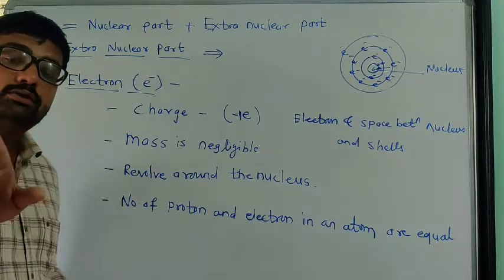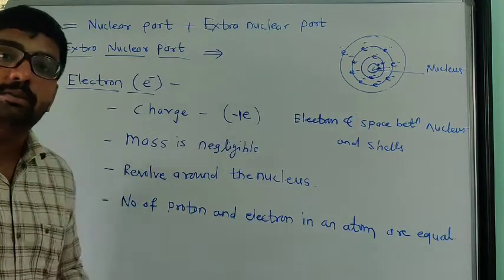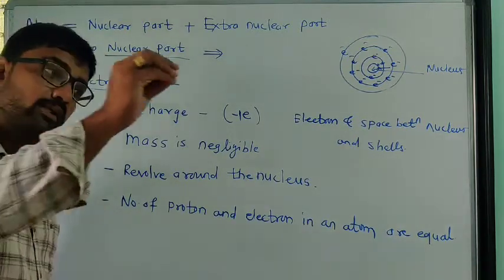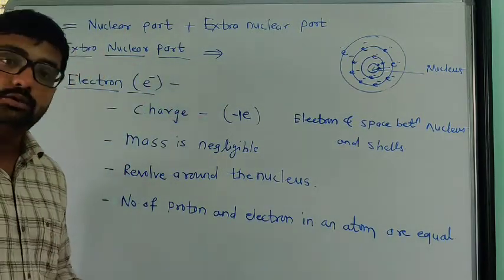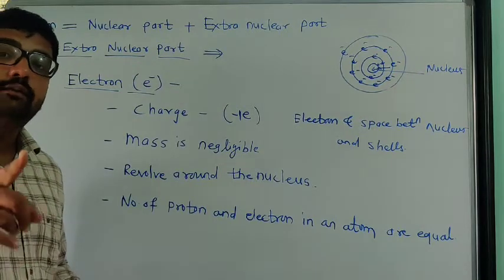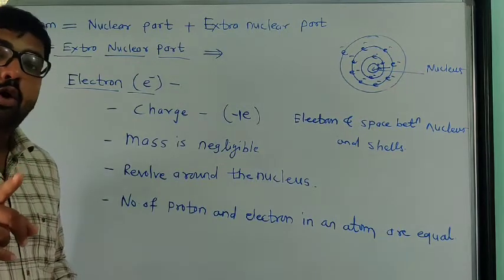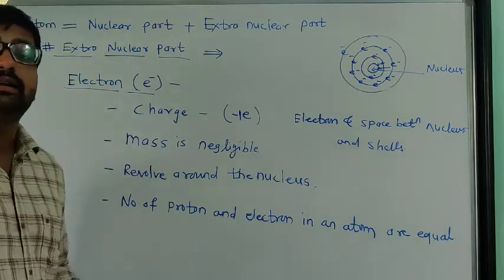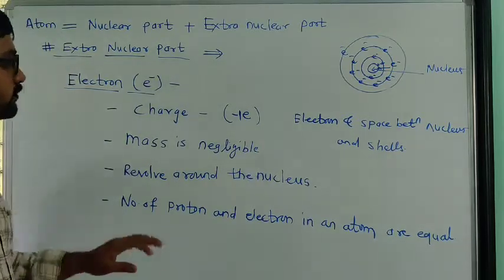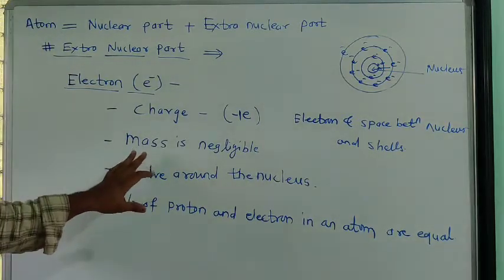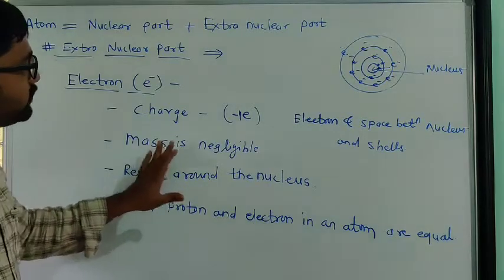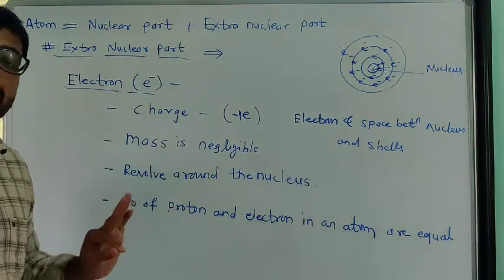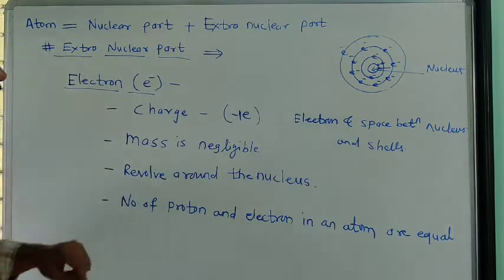Proton and neutron have nearly equal masses, and all protons and neutrons are situated inside the nucleus. That is why we say all the mass of an atom is situated inside the nucleus. So that thing also you have to remember: mass of electron is negligible, meaning very very small.